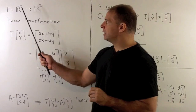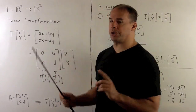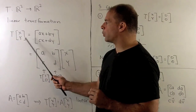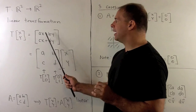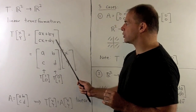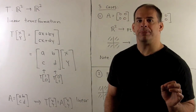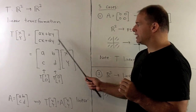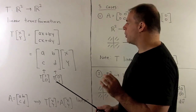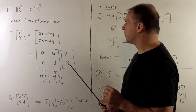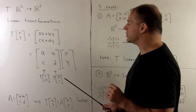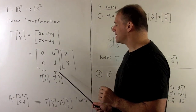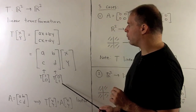Suppose T is a linear transformation from R2 to R2. Then I can represent T as T on the vector XY going to AX plus BY, CX plus DY, where A, B, C, and D are fixed real numbers. We can write this as a matrix-vector product: the matrix ABCD on the vector XY. The recipe here is: first column is T evaluated at (1,0), second column is T evaluated at (0,1).